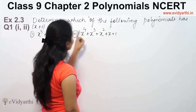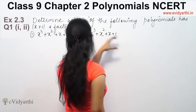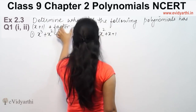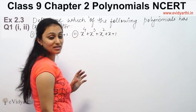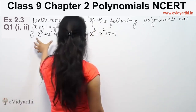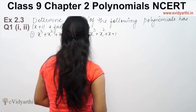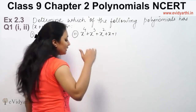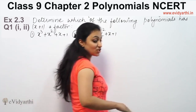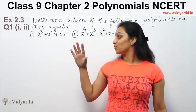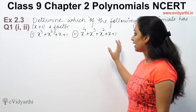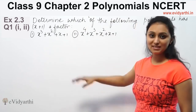This question asks us to determine which of the following polynomials has x plus 1 as a factor. x plus 1 is a factor when the polynomial is completely divided with remainder 0; otherwise it is not a factor.